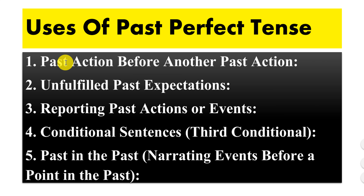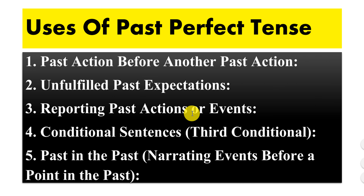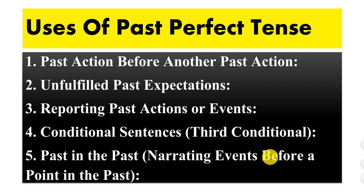Number first is past actions before another past action. Number second is unfulfilled past expectations. Number third is reporting past actions or events. Number fourth is conditional sentences — the third conditional sentences. And number fifth is past in the past, meaning narrating events before a point in the past. So let's give examples of the uses of past perfect tense.